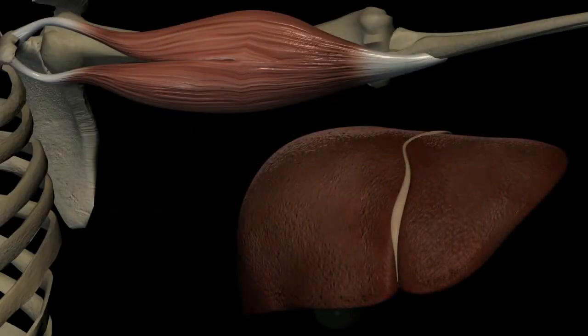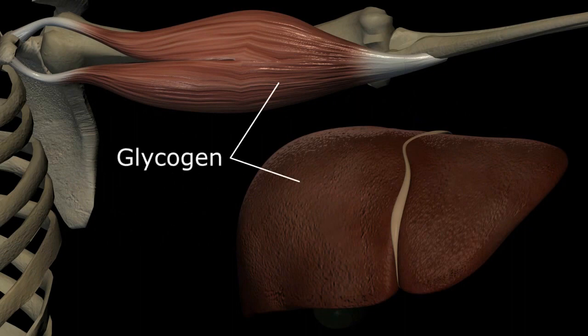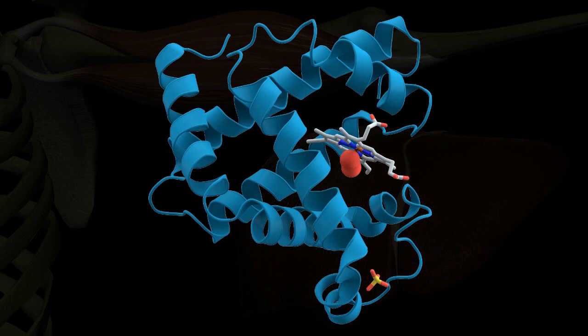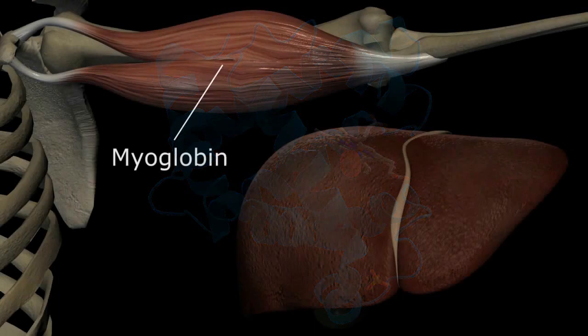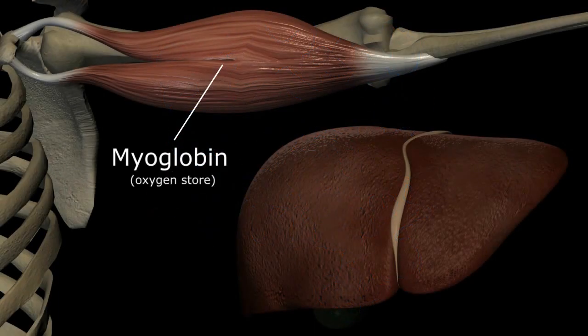In the liver and muscles, glycogen can be rapidly broken down into glucose for quick energy and myoglobin is the iron-containing molecule in the skeletal muscles of animals that provides a local oxygen source. However,